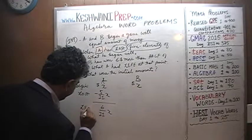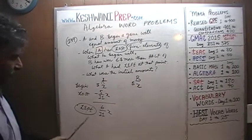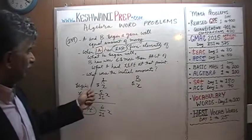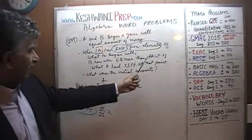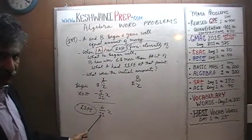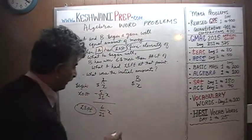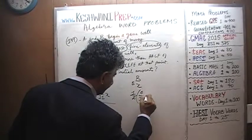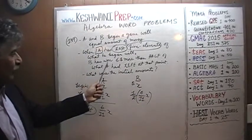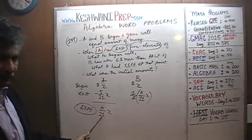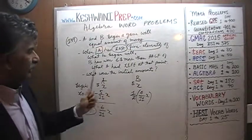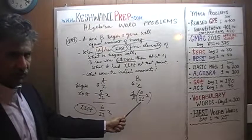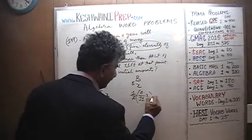This is how much A has left. Don't confuse the two words: left and lost. This is how much he has lost; as a result, this is how much he has left — 6 elevenths of X. We are told that at that point B has won six dollars more than half of what A has left. Half of 6 elevenths X, plus six dollars more. We are not told B won exactly half — he won that amount plus six more dollars.